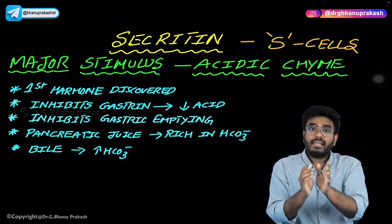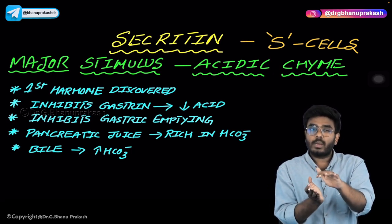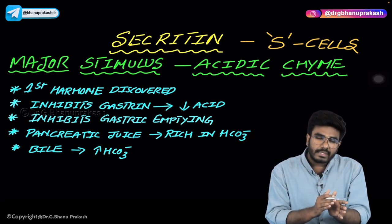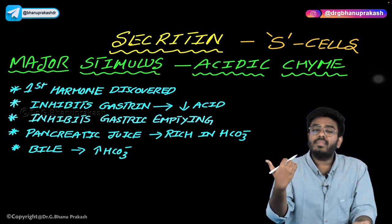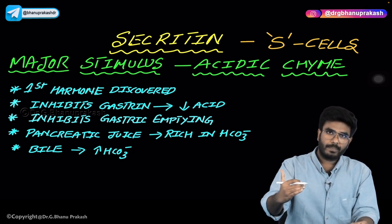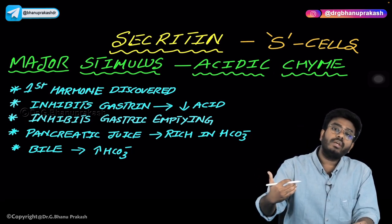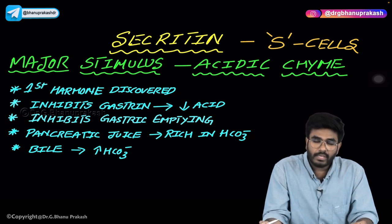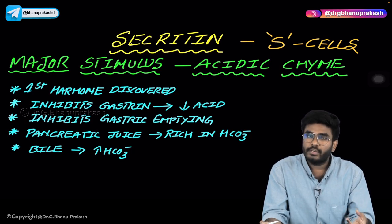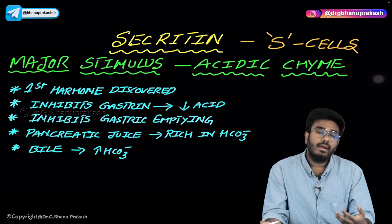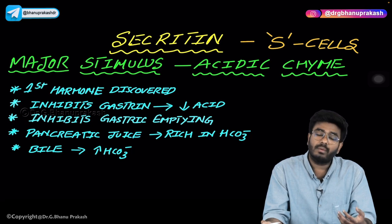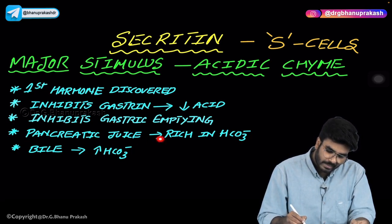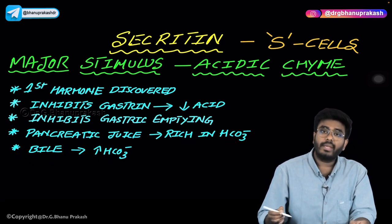When there is secretin, gastric emptying is inhibited, meaning food from the stomach doesn't rush into the duodenum all at once — which would flood it with acid. Instead, food enters little by little, and the small amounts of acid are neutralized in the duodenum by bicarbonates from Brunner gland secretions, pancreatic juices, and bile. Secretin acts on pancreatic juice to make it rich in bicarbonates, and also acts on bile to increase its bicarbonate secretion.